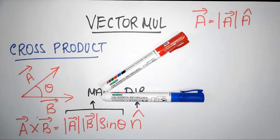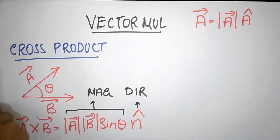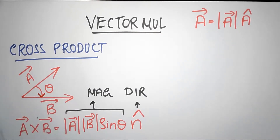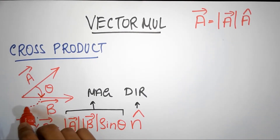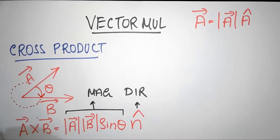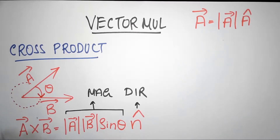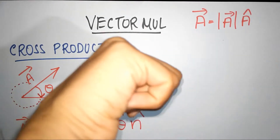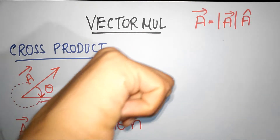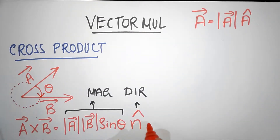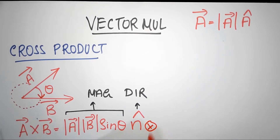In this particular case, A cross B is this way. Imagine the rotation — the rotation is clockwise as seen from above. Therefore, you take your right hand, curl it clockwise, and the thumb gives you the direction of the cross product. In this example, n-cap is directed into the paper.